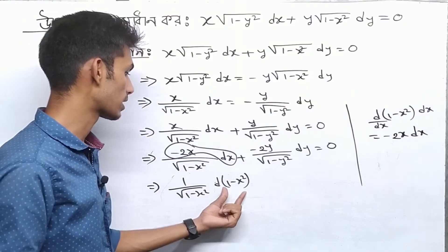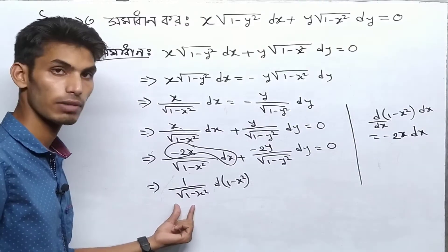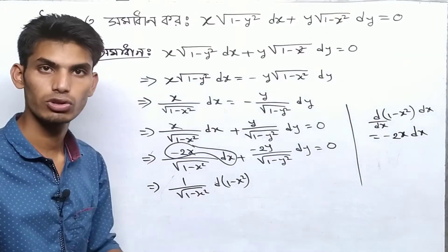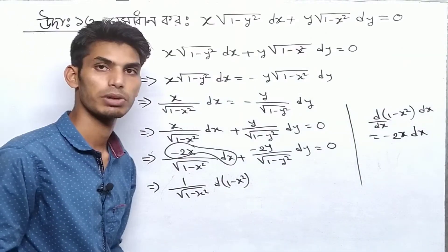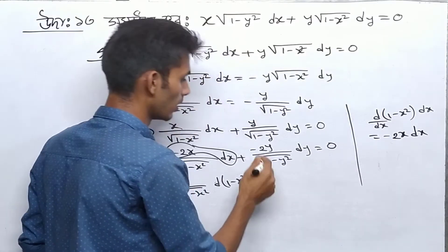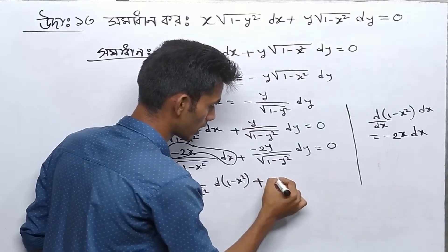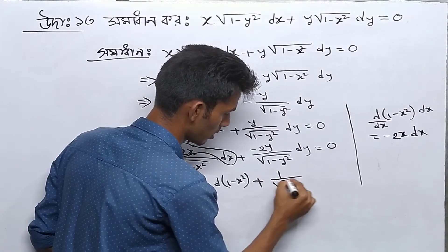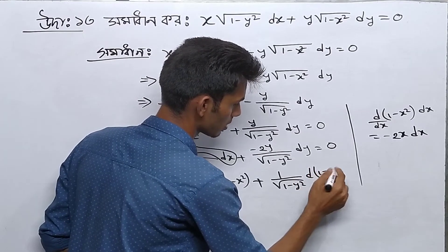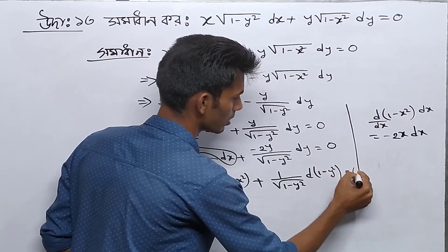We write 1 minus x squared, and by the same case for y, we write 1 over root(1-y²), then d(1-y²) equals 0.